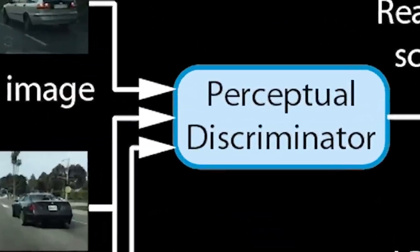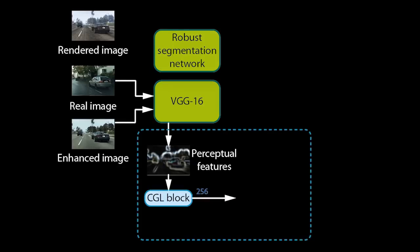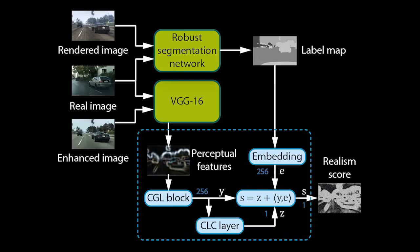Let us now look at how the perceptual discriminator works. The discriminator contains a robust semantic segmentation network and a network for extracting perceptual features, in this case a VGG-16. We extract features from the VGG at multiple levels and pass them through a convolutional network. This differs from prior work that trains discriminators directly on images. Training on VGG features allows our network to quickly learn a model of realism at multiple perceptual levels. We further pass the unmodified rendered image as well as real images through the segmentation network to obtain a label map for each. The label map is used to specialize the discriminator on individual object classes. Since we use a pre-trained, robust segmentation network, the object classes are consistent for rendered and real images. For more details, we refer to our paper.